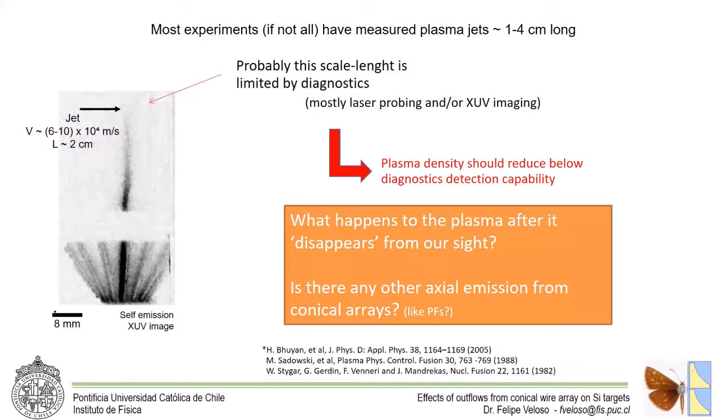So our first question was what happened to the plasma after it disappears from our sight? Or is there any other axial emission from the conical wire array, just like it happens in plasma focus discharges where energetic ions are emitted in the axial direction?